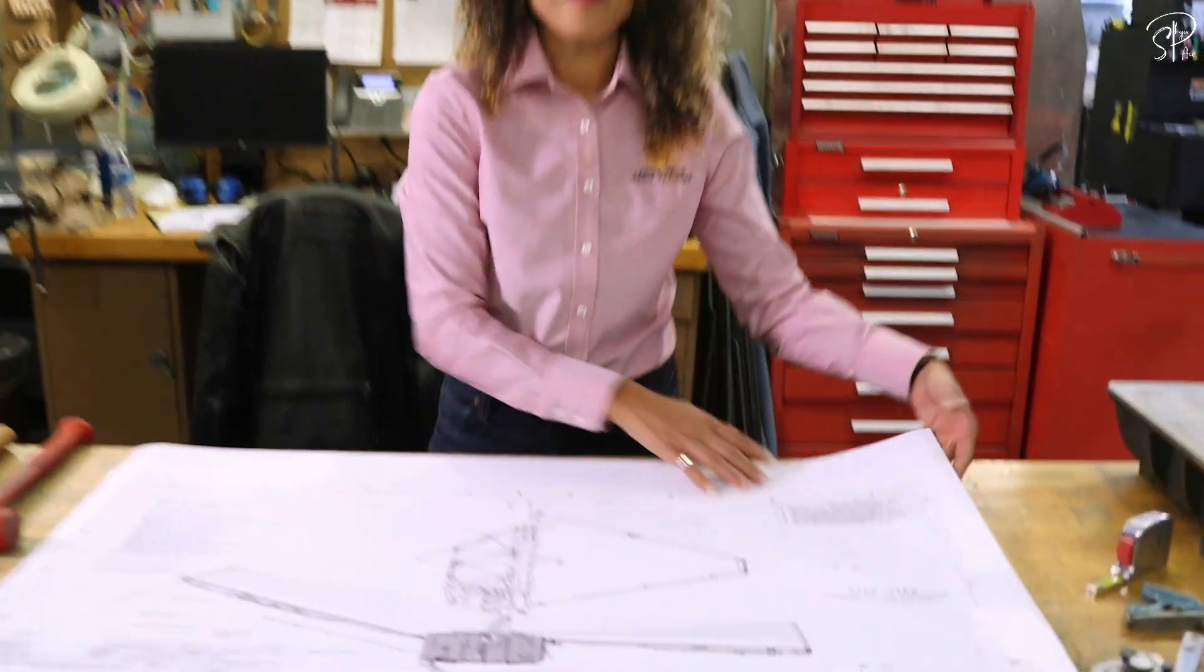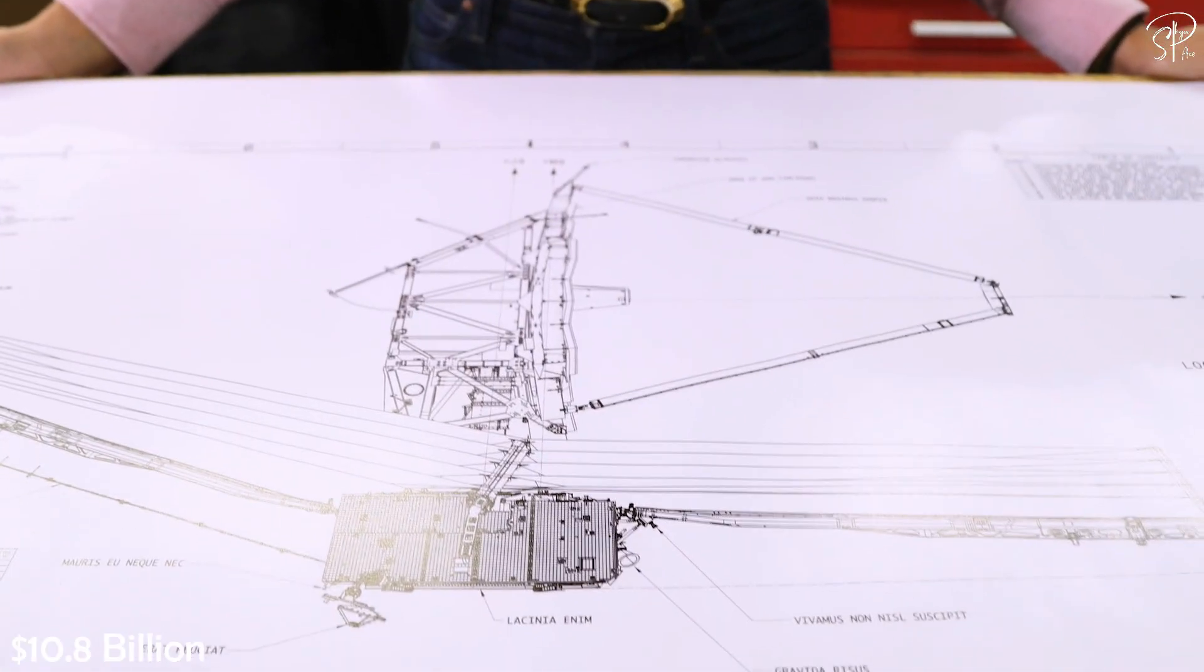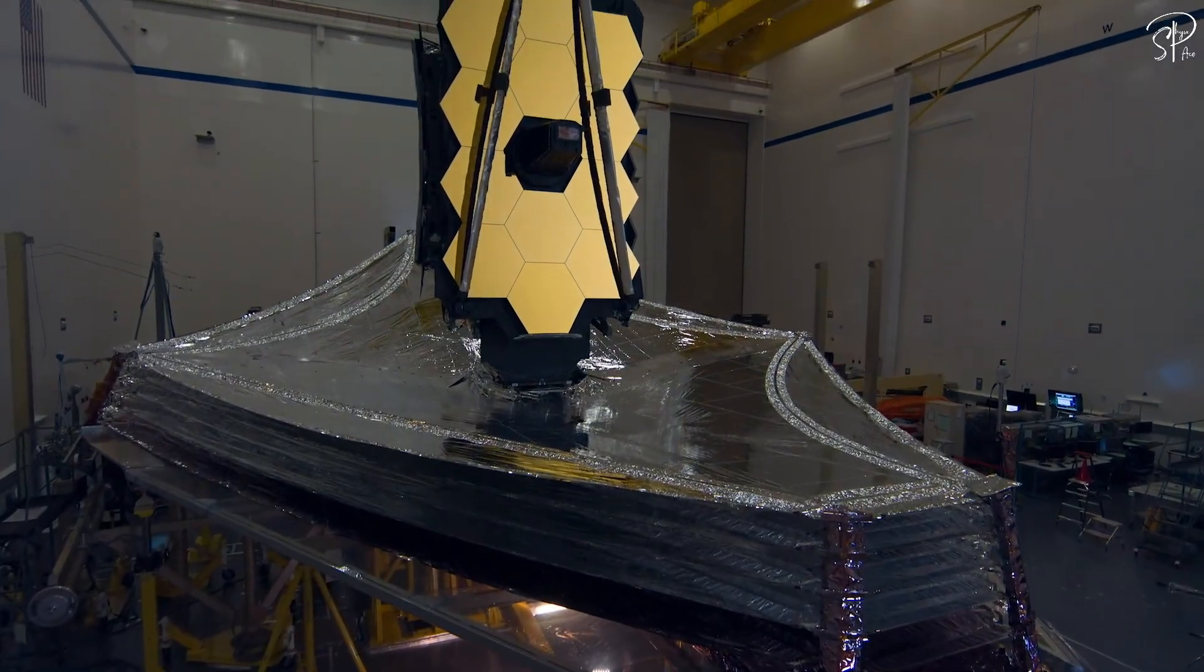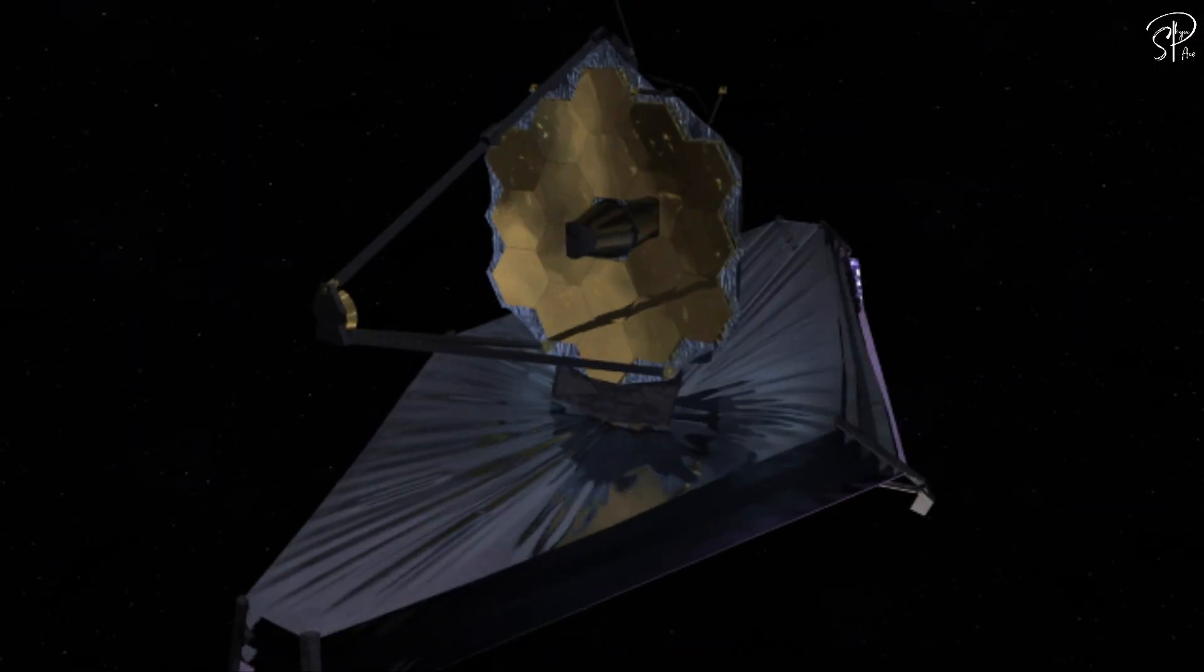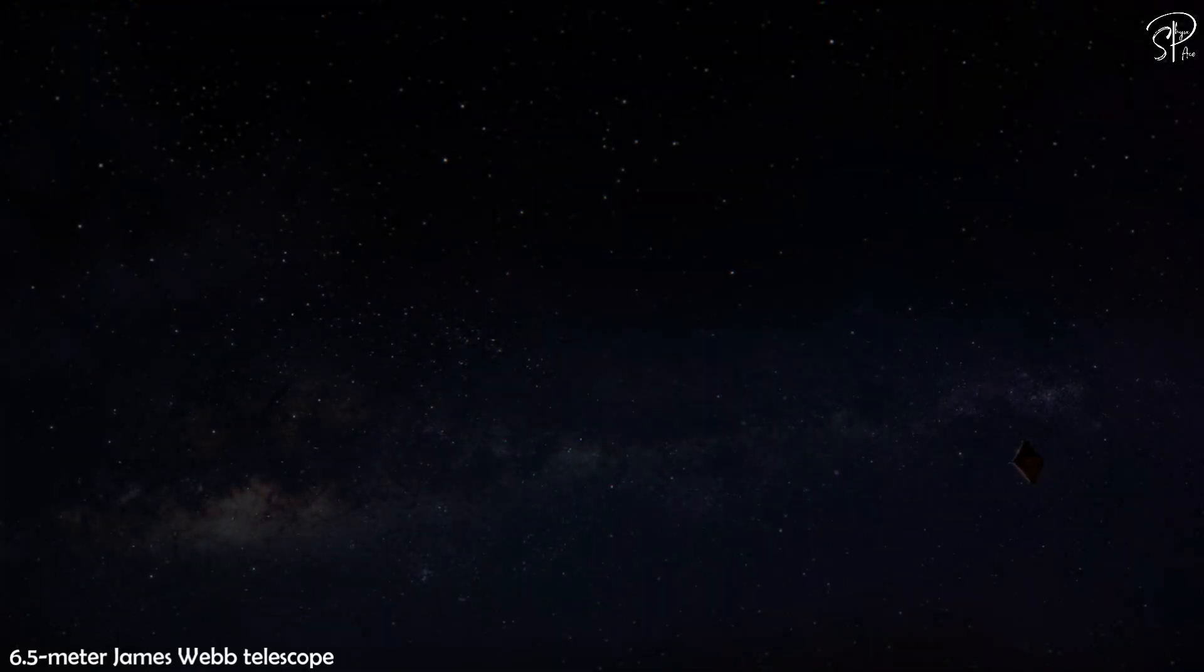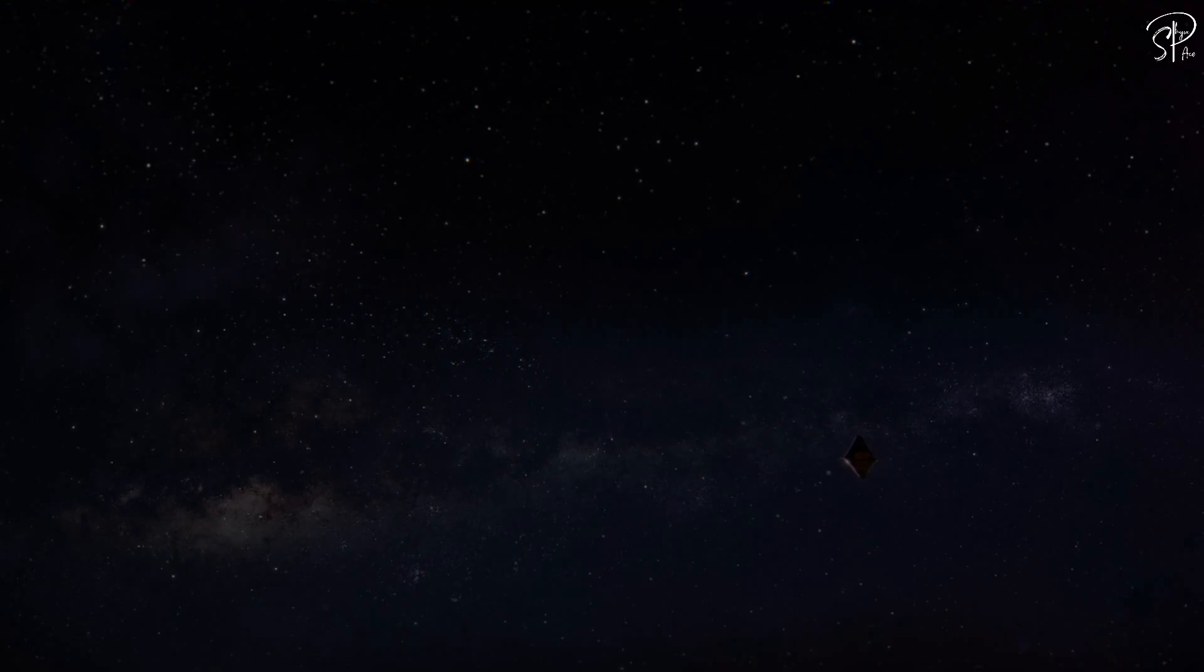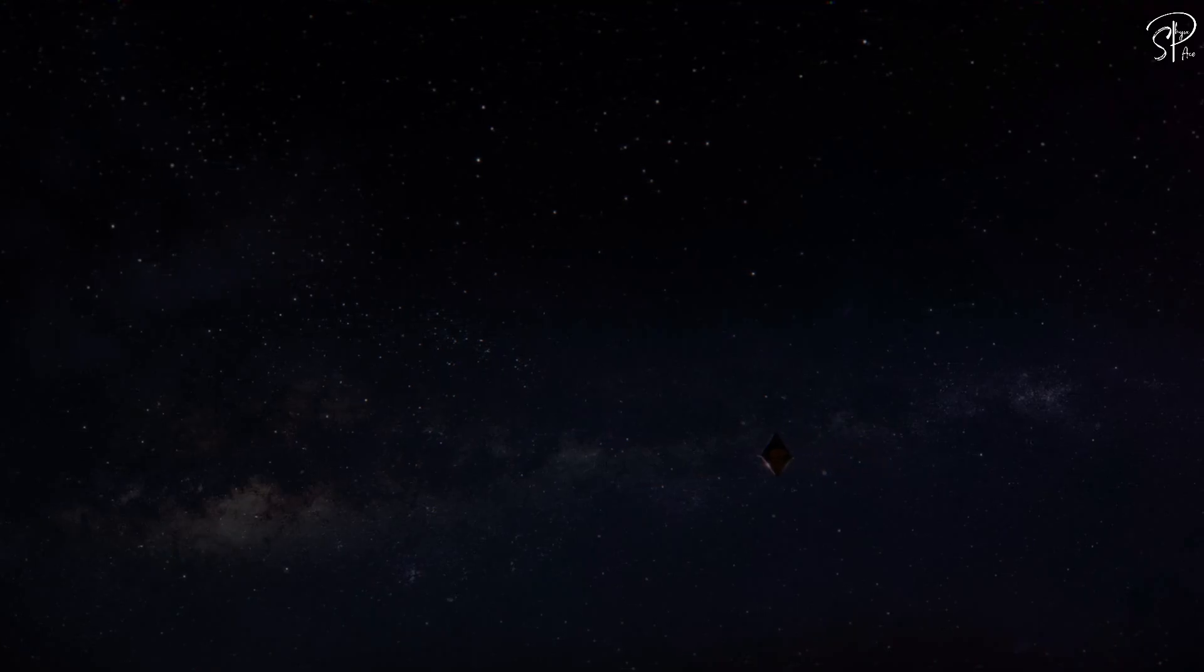It will cost 1.5 billion dollars. But James Webb Telescope cost NASA over 10.8 billion dollars. So why did we not spend less and build a bigger maybe a 100 meter telescope rather than just a 6.5 meter James Webb Telescope? Because there are two big problems.